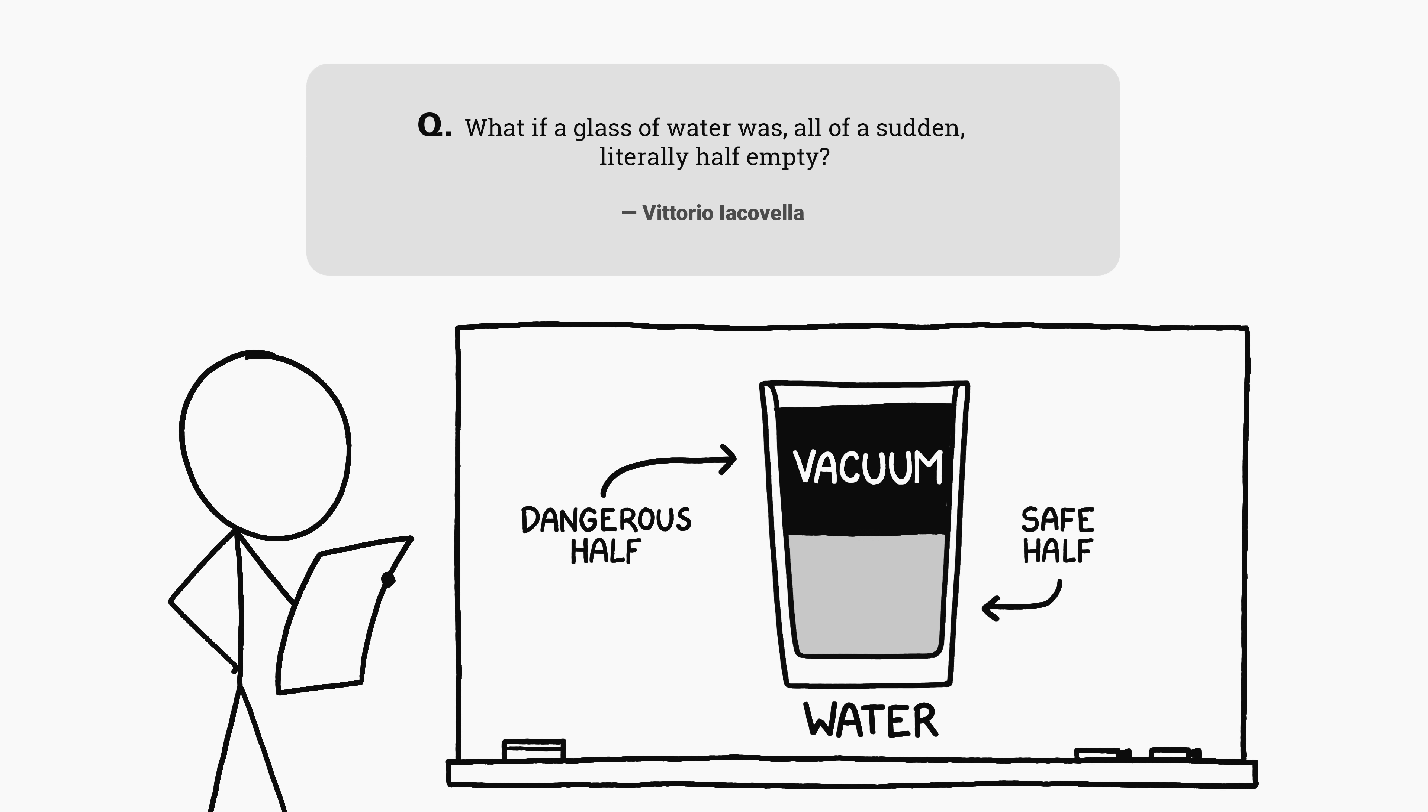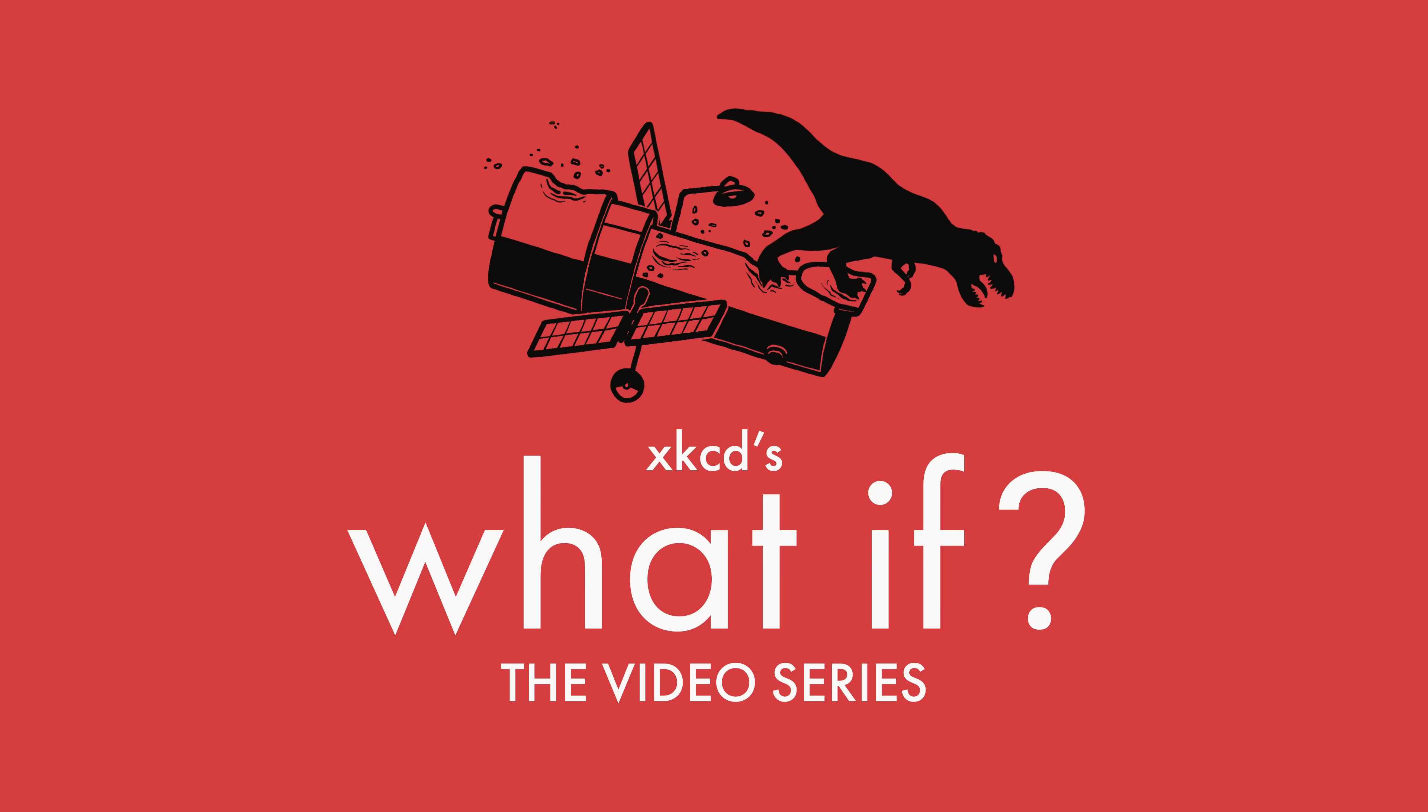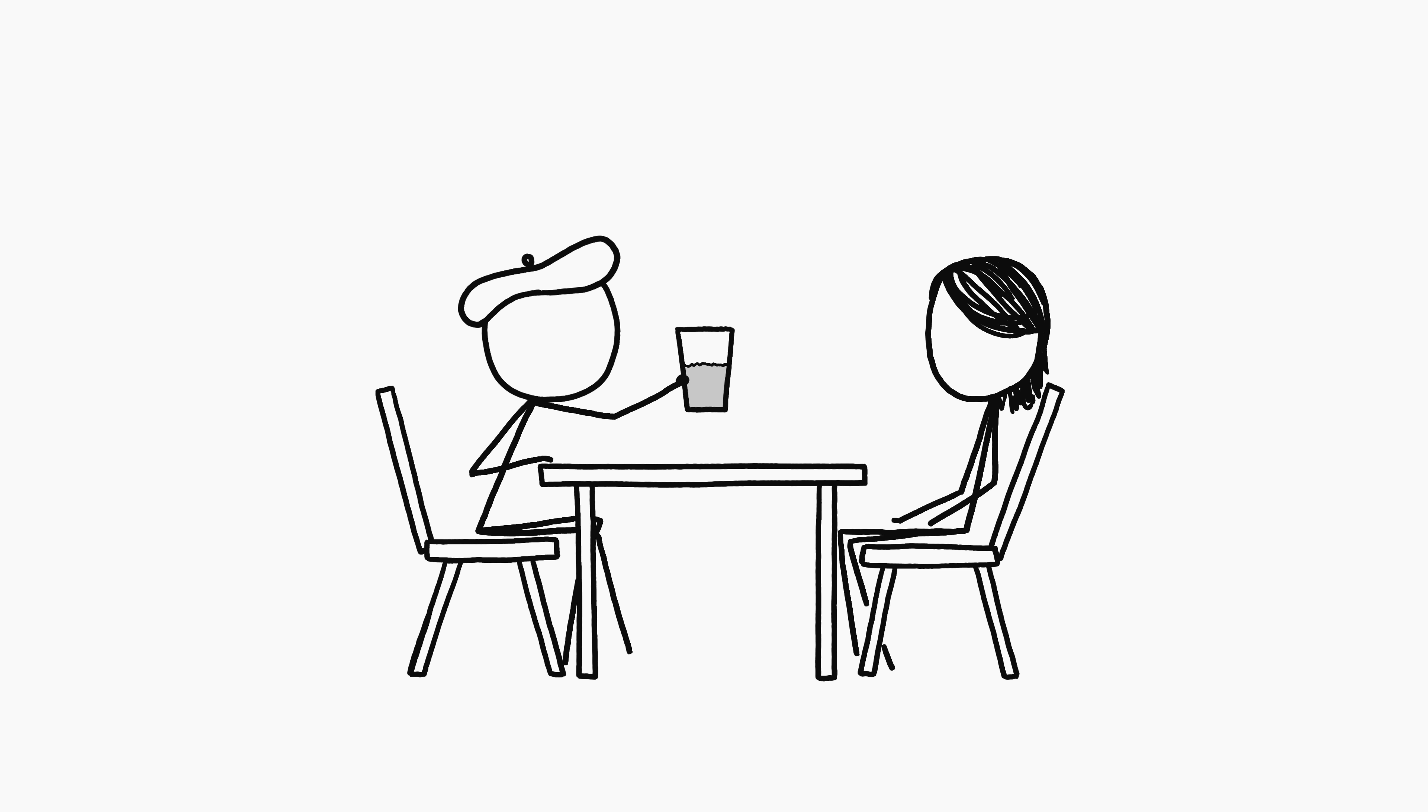The pessimist is probably more right about how it would turn out than the optimist. When people say glass half empty, they usually mean a glass containing equal parts water and air. Traditionally, the optimist sees the glass as half full, while the pessimist sees it as half empty.